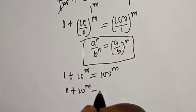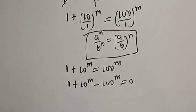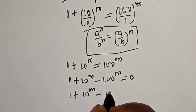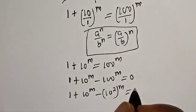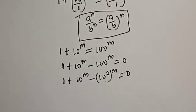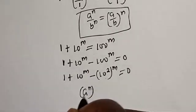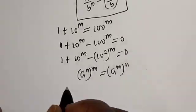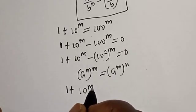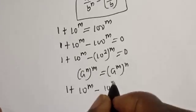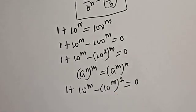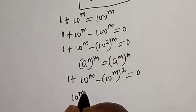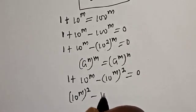So we have 1 plus 10 raised to power m minus 100 raised to power m is equal to 0. This is 1 plus 10 raised to power m minus 100, which is 10 squared, raised to power m is equal to 0. Now also note that a raised to power n to the power of m is equal to a raised to power m to the power of n. So this becomes 1 plus 10 raised to power m minus 10 raised to power (m squared) is equal to 0.